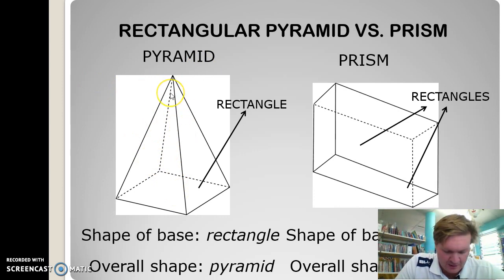Are the sides triangles? Yes, they are. Do they meet at the top of an apex? Yes, they do. That criteria makes it clear that that is a pyramid.